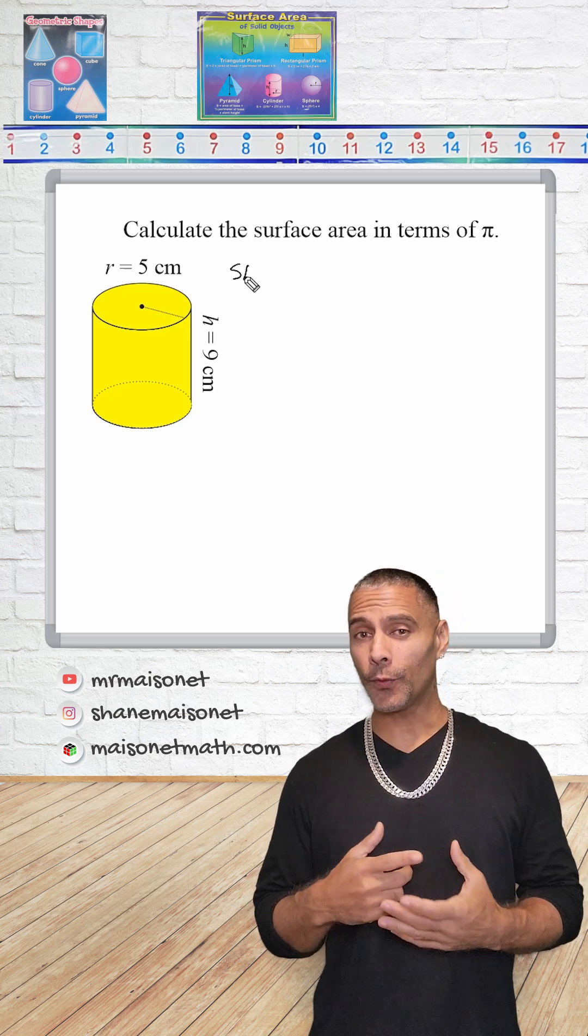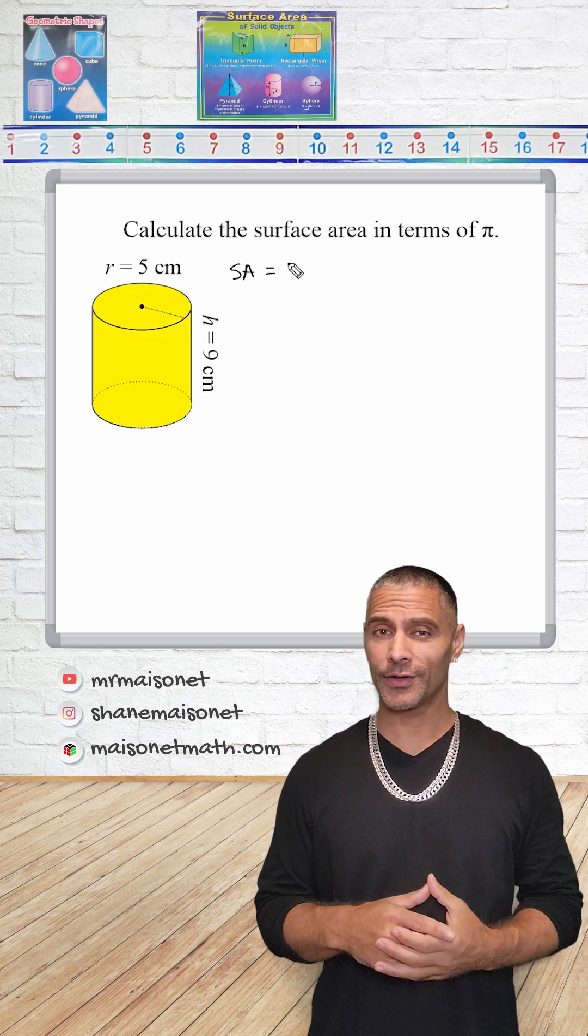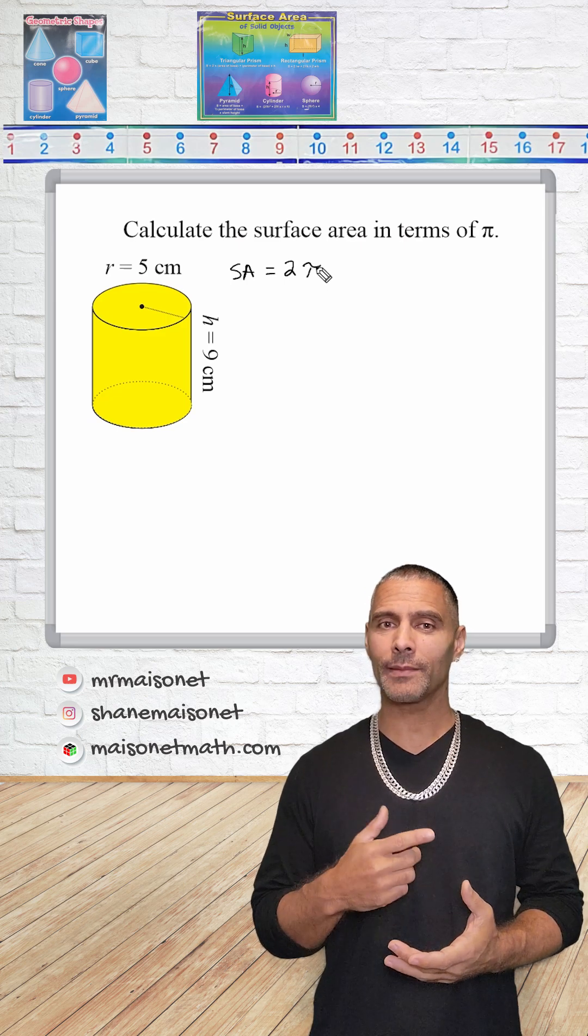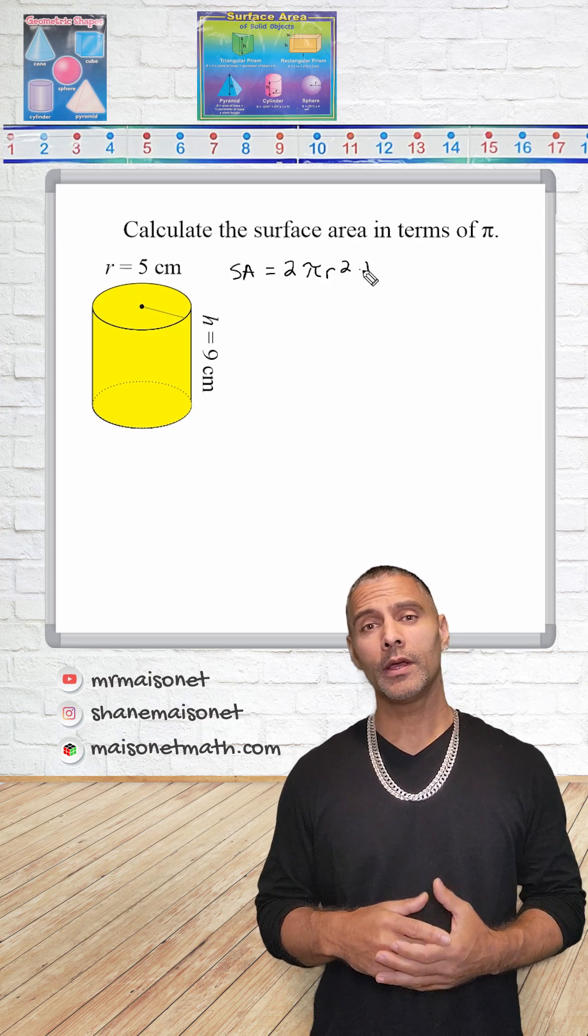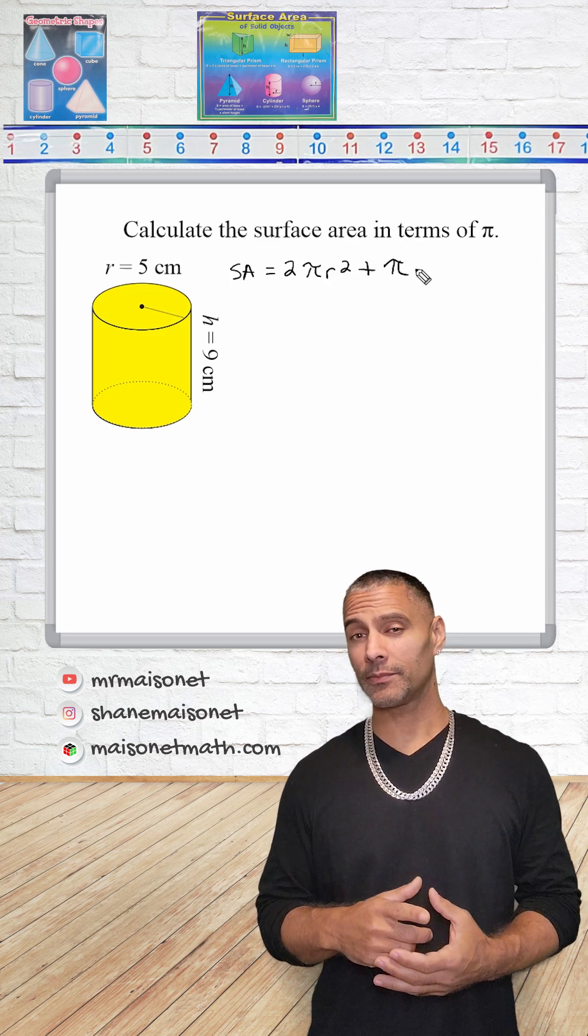So let's begin by stating the formula to find the surface area of a cylinder, which is equal to 2 times pi times the radius squared plus pi times the diameter times the height.